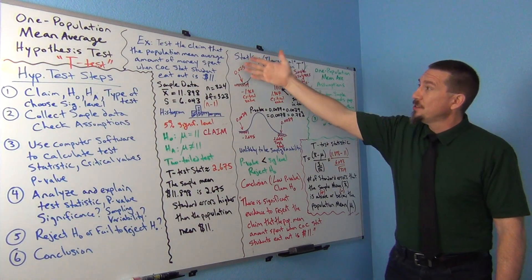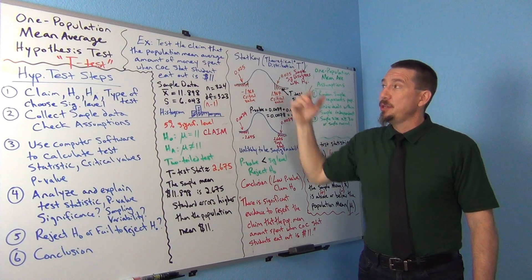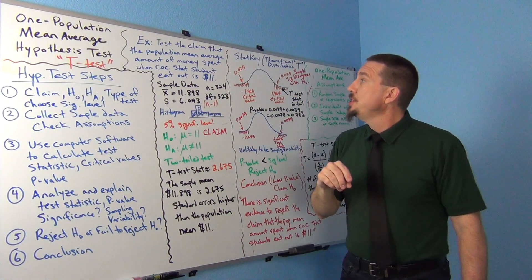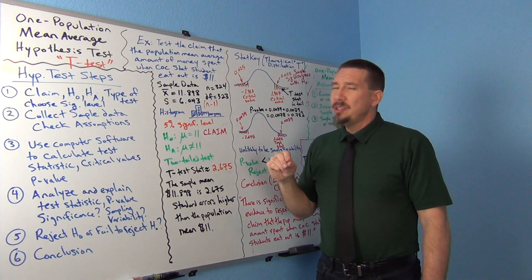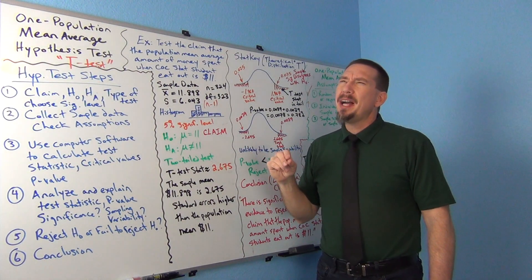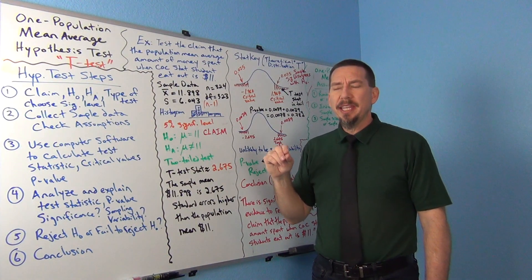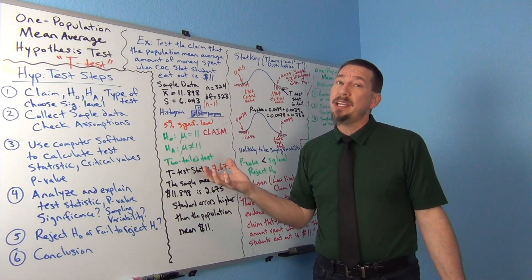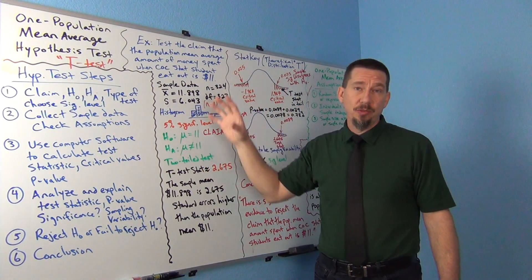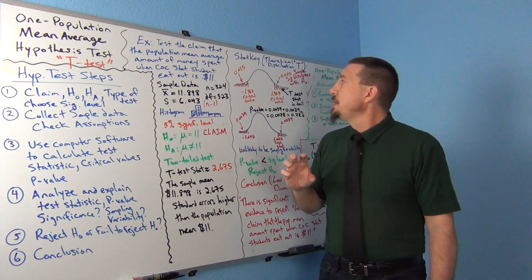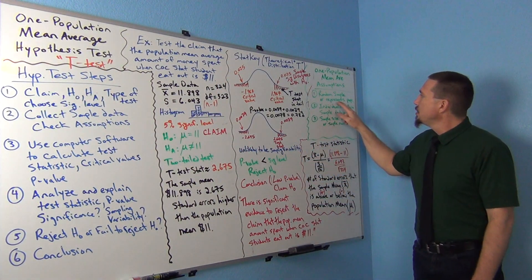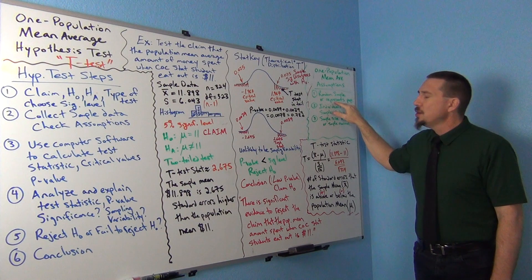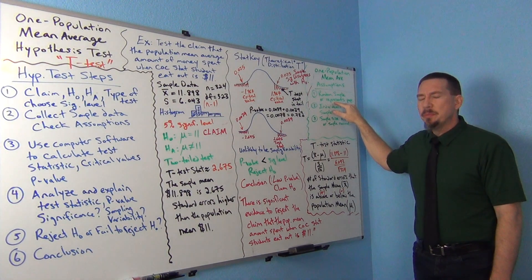Was this a random sample? No, it wasn't. Actually, it was a census of just one semester at the college. One semester of stat students. So, it was not a random sample. But, you could probably make the argument that that one semester of stat students is probably representative of the population of all stat students at the college. We might be able to get away with making that assumption. Even though this data wasn't a random sample, I think it was probably pretty good. At least you could make the argument that it does represent the population.